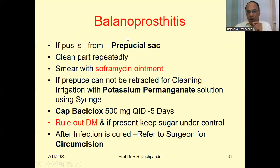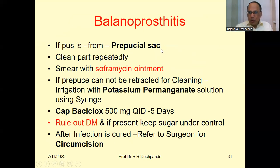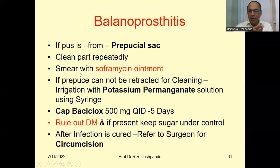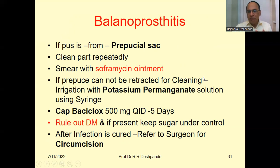There is another disease with pus that is not exactly gonorrhea — it is called balanoprosthitis. Remember this word: balanoprosthitis. If pus is from the prepucial sac, clean that particular part repeatedly. You can apply soframycin ointment around the prepuce. If the prepuce cannot be retracted for cleaning, then irrigation and cleaning will be done with potassium permanganate solution using a plastic syringe.